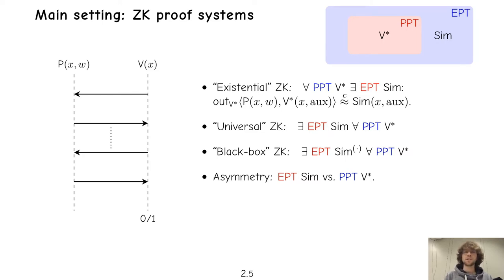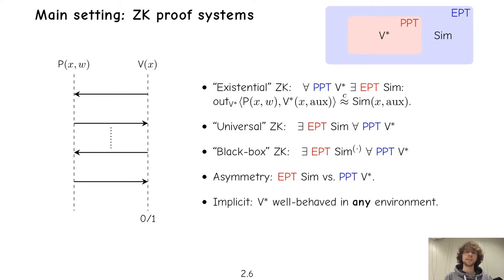With this choice, another implicit assumption becomes more apparent. With PPT adversaries one usually assumes that they are well-behaved in any environment — there is one polynomial bound and it will hold no matter what machines the verifier interacts with. For expected polytime verifiers this is not so clear anymore.